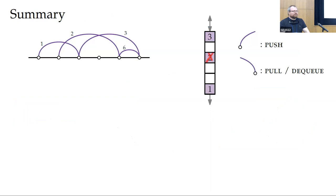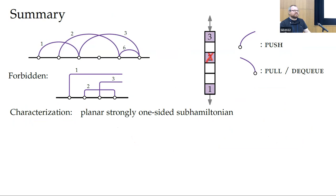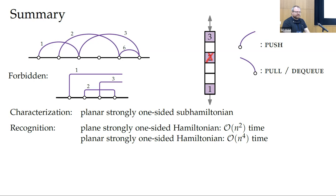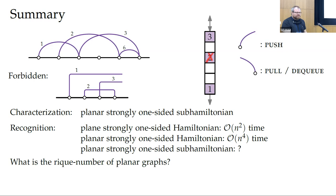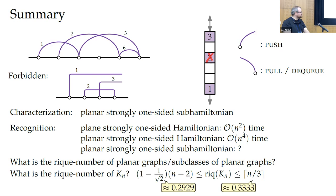In summary: we introduced requeue layouts, found their forbidden configurations, and gave a characterization via strongly one-sided sub-Hamiltonian graphs. For recognition, when restricted to Hamiltonian graphs, it is solvable in polynomial time. The sub-Hamiltonian case remains open. Open questions include: what is the requeue number of planar graphs, your favorite graph class, or complete graphs? For complete graphs, the requeue number is between 0.2929 and 0.333. For complete bipartite graphs, almost nothing is known.